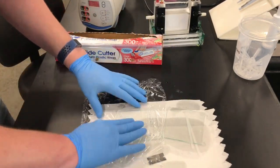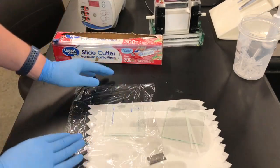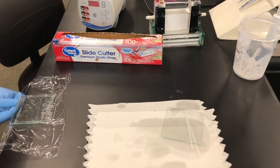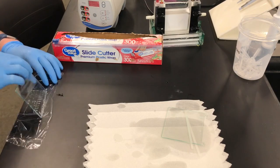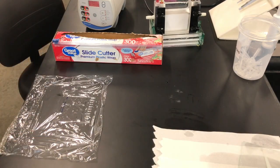Then, using some saran wrap, place it on it, flip it over, and pull the saran wrap off the table and use a razor blade to transfer the gel from the plate to the saran wrap.